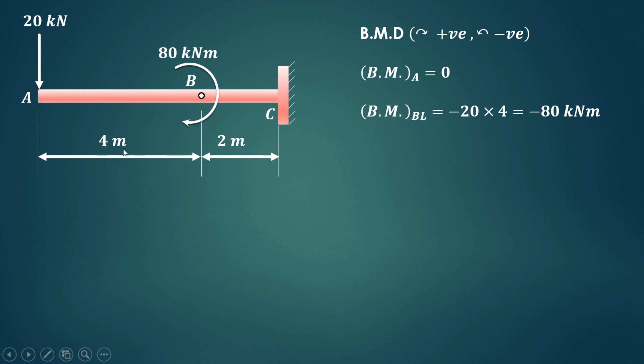There is only one force that is 20 kN and from A to B the distance is 4 m, so it is producing anti-clockwise moment about point B. So it is minus 20 into 4, that is minus 80 kNm. But exactly at B there is a clockwise moment, that is external moment that is acting and magnitude is 80 kNm.